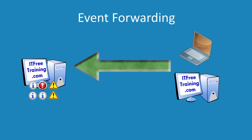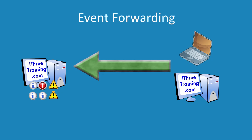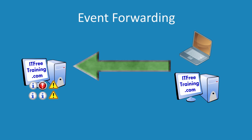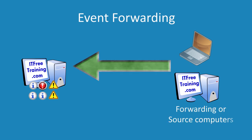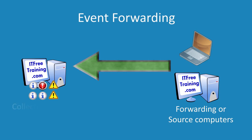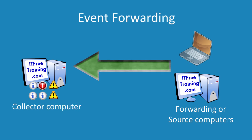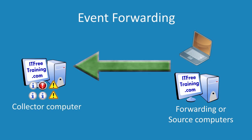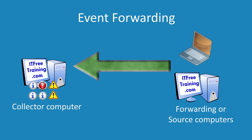Before we get started, let's look at some terminology. The computer or computers that are configured to forward events are called the forwarding computers or source computers. The computer that is configured to receive these events is called the collector. The collector can be a Windows 7 computer, however on a lot of networks you will find that a Windows server has been configured for this role.